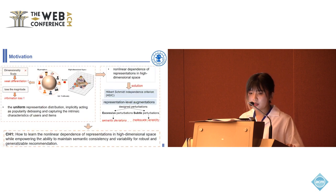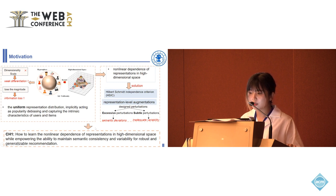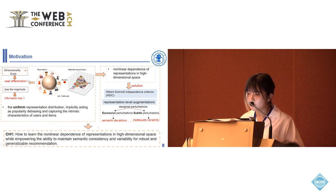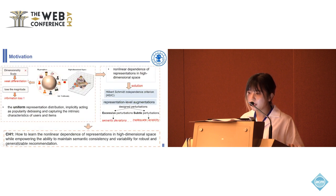Firstly, the success of contrastive learning applied to recommendation primarily stems from the uniform representation distribution implicitly acting as popularity debiasing and capturing the intrinsic characteristics of all users and items. However, the original intent of L2 normalization is to map the data onto a unit hypersphere. This process doesn't change the dimensionality of the data, but only influences the scale of the data, leading to weak differentiation. Moreover, it may lose the magnitude and lead to information loss.